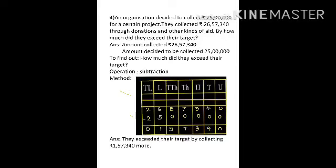Write the numbers properly in all the columns. This is a simple subtraction: 0 minus 0 is 0, 4 minus 0 is 4, 3 minus 0 is 3, 7 minus 0 is 7, 5 minus 0 is 5, 6 minus 5 is 1, and 2 minus 2 is 0. Always go from units, then tens, then hundreds, then thousands, then 10,000, then lakhs, then 10 lakhs. So the answer is they exceeded their target by collecting Rs. 1,57,340 more.